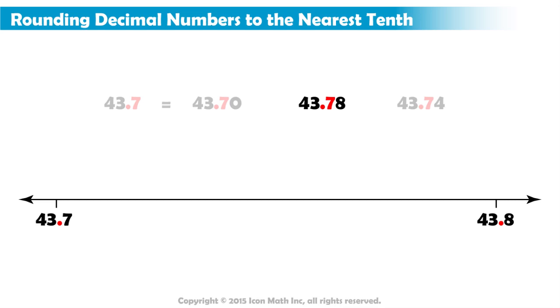To know which of these benchmarks we should round to, we look at the first digit on the right of the tenths place. And that will be in the hundredths place. The value of this digit will tell us whether we are closer to 7 tenths, or 8 tenths.